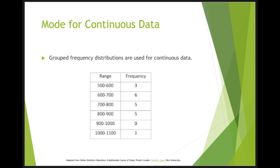How do you calculate the mode when every score has a frequency of one? The solution to this problem is to compute the mode from a grouped frequency table. This table shows a grouped frequency distribution for response time data. The interval with the highest frequency is 600 to 700, so the mode is the middle of that interval, which is 650.